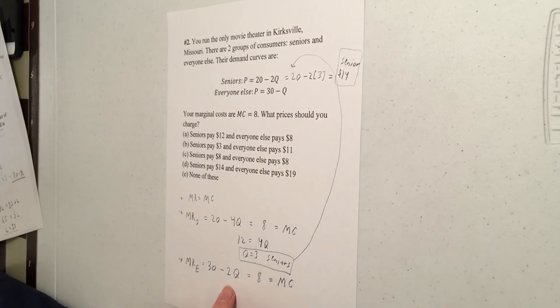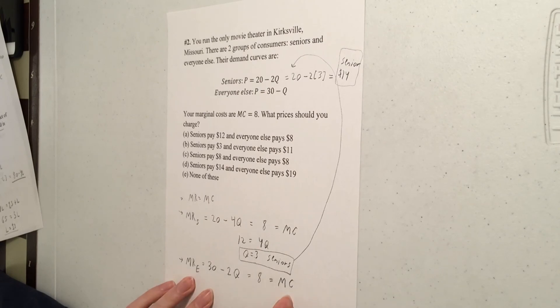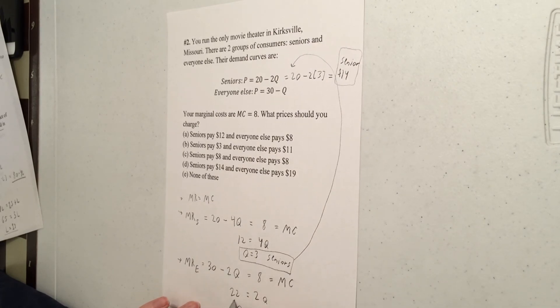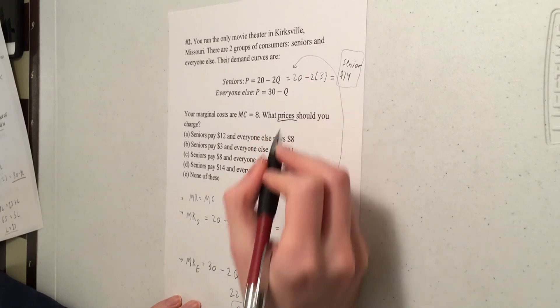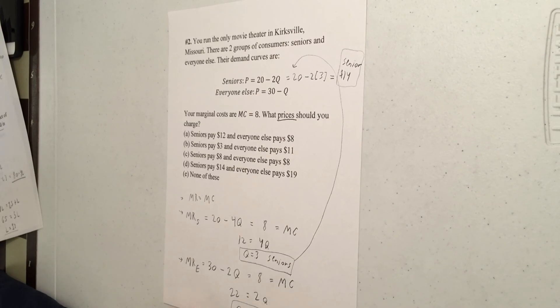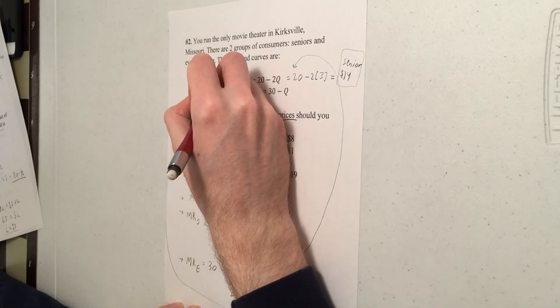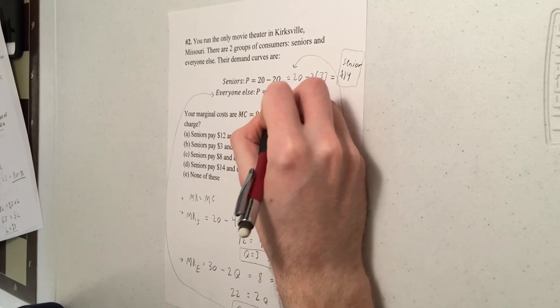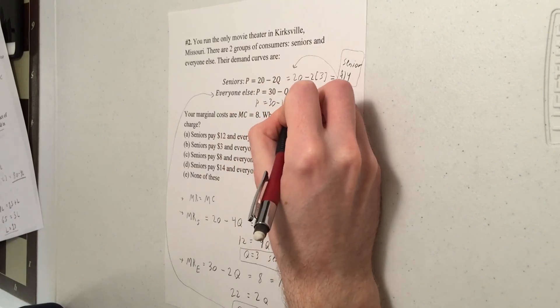For everyone else, let's go and solve this marginal revenue equals marginal cost. Move the eight over here, and I get 22. Move the 2Q to the other side, have a plus 2Q. Divide both sides by two and you get Q is 11. Now we're not done. We're trying to find the price you want to charge, not the quantity. So you plug that quantity into demand for everyone else. So price will be 30 minus Q, but we know Q is going to be 11. So 30 minus 11 comes out to 19.